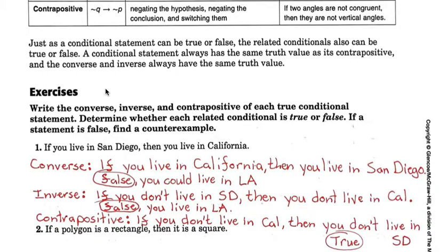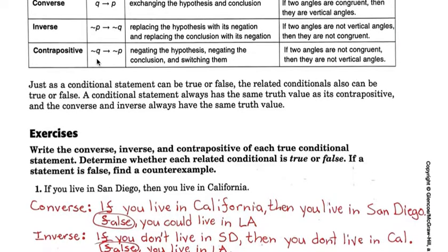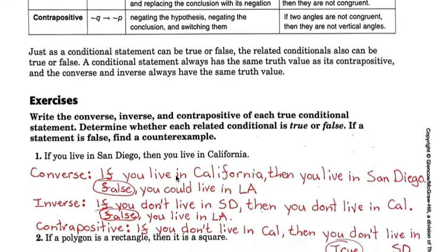The inverse, now remember the inverse, that's where we give nots to P and Q. We don't switch. If you don't live in San Diego, then you don't live in Cali. Well, again, that's not true. You could live in L.A. We'd make that counterexample.